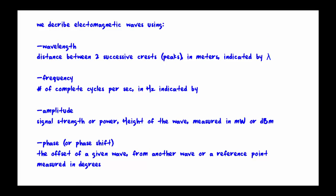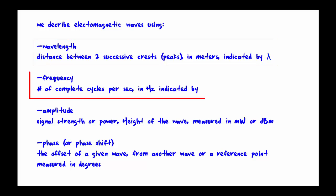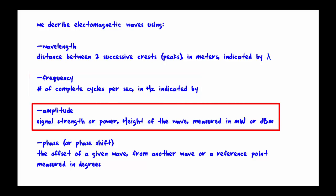So how do we describe electromagnetic waves? Wavelength, which is the distance between two successive crests or peaks in meters, indicated by lambda. Frequency, which is the number of complete cycles per second in hertz, indicated by the letter F. Amplitude, which is signal strength or power, or the height of the wave, measured in milliwatts or dBm.